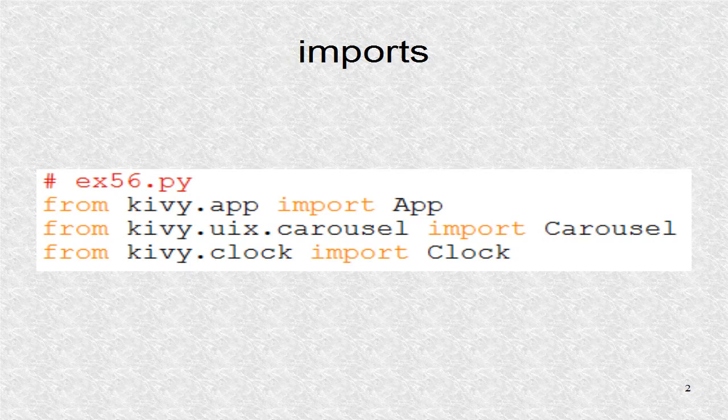Since this is an application, we need the app class. The carousel widget is the super class of the route. We use the clock to create a 1 second timer.